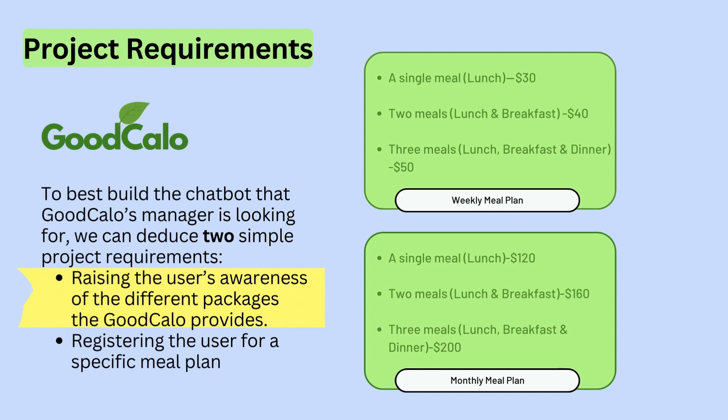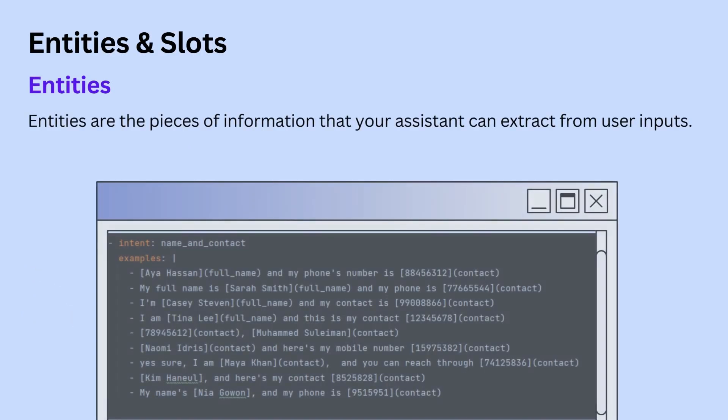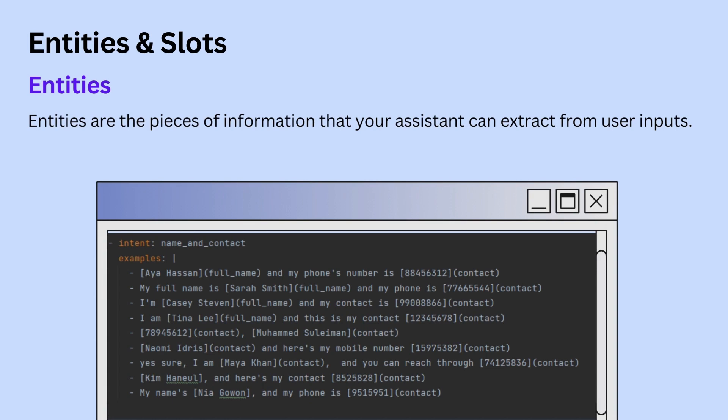To better understand why we need these two mechanisms, let's define them. Entities are pieces of information that your assistant can extract from user inputs. That information can be phone numbers, names, or even emails, and they can later be used in a specific context when responding back to the user or running specific actions. Entities should be located in your nlu.yml file.